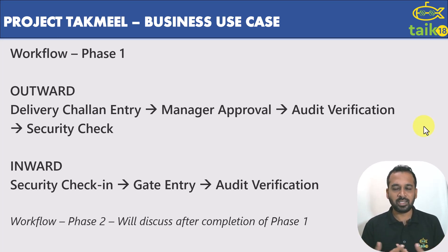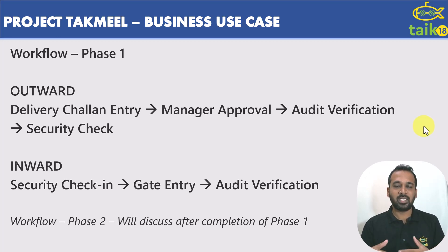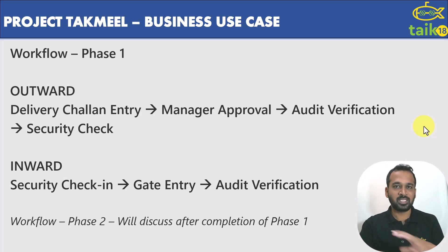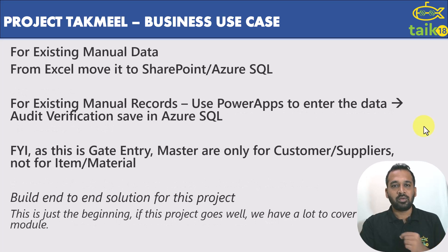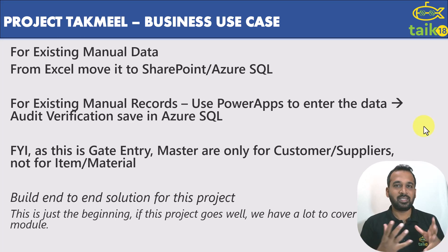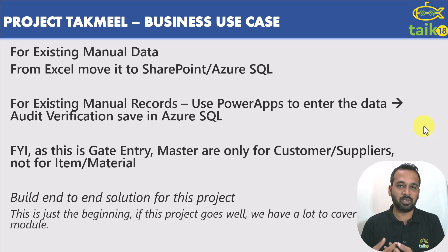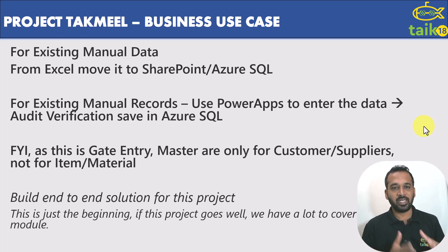To understand this, we need to draft a scope of how we need to do this, and also there are a couple of questions which we need to add. If there is some misconception about the requirement, we can ask the customers and they will get back to us with their replies. For existing data, manual data — it's what they are proposing but not a complete solution. We need to propose it ourselves. For existing manual data from Excel, move it to SharePoint or Azure SQL as they have mentioned.